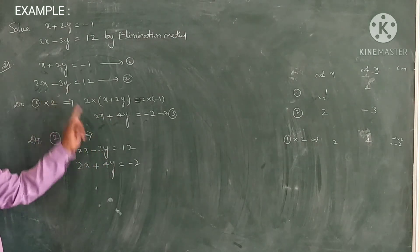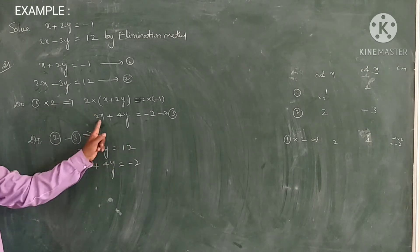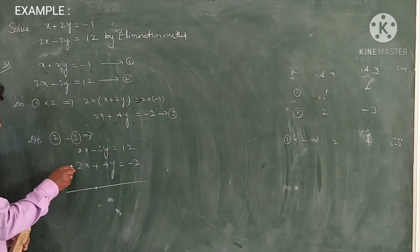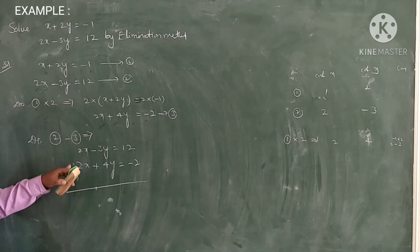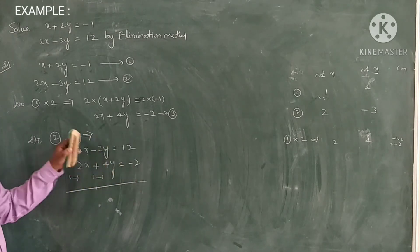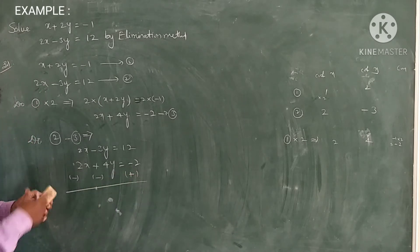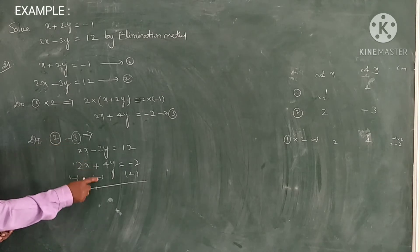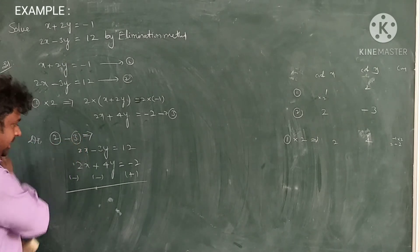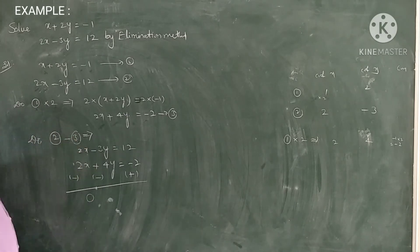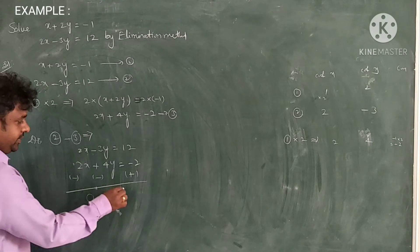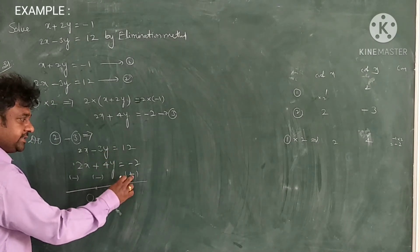Equation 2 is 2x minus 3y equals 12, and equation 3 is 2x plus 4y equals minus 2. We multiply equation 3 by minus 1: minus into plus gives minus, minus into plus gives minus, and minus into minus gives plus. So subtracting: 2x minus 2x gives 0; minus 3 minus 4 gives minus 7y; and 12 plus 2 gives plus 14. So minus 7y equals 14.